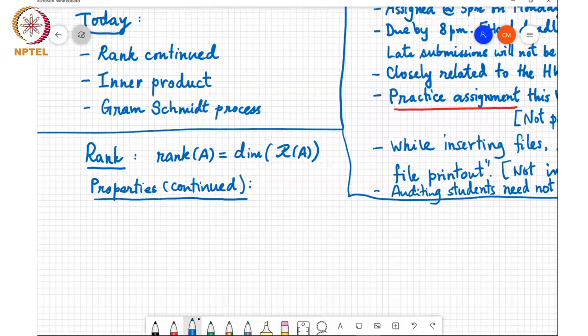Then we also said that if you are given a linear system of equations Ax equals B, it can have no solution, one solution or infinitely many solutions, and it will have at least one solution if the rank of the augmented matrix AB equals the rank of A. If the rank of the augmented matrix A concatenated with B is greater than the rank of A, then there is no solution.